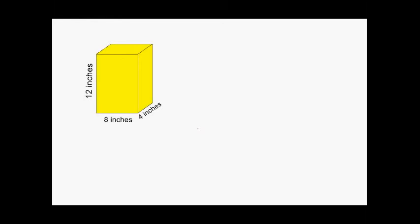To find the surface area of a rectangular prism, all we are doing is finding the area of all six rectangles or surfaces and adding those areas together. We'll start by identifying the dimensions of the front surface: eight by 12. Because the front and back surfaces are identical, we write 2 times (8 × 12).